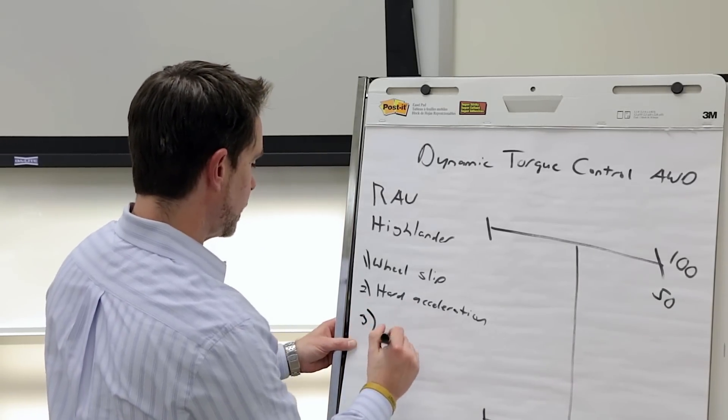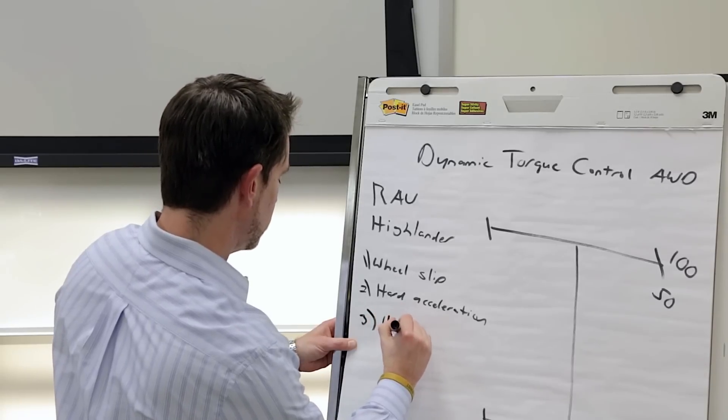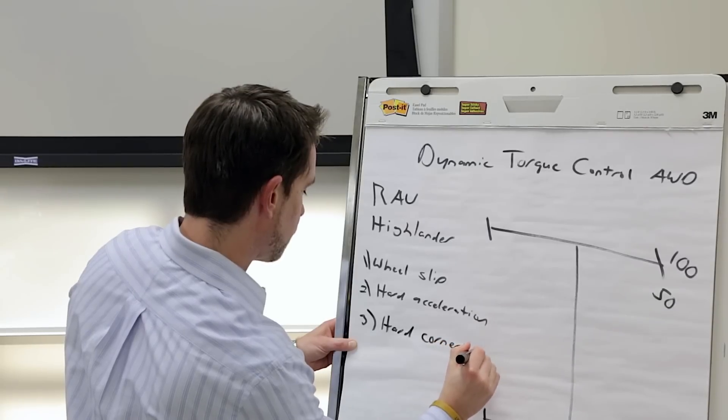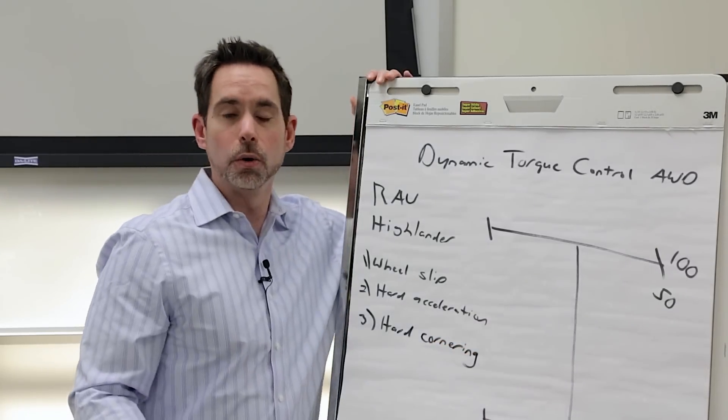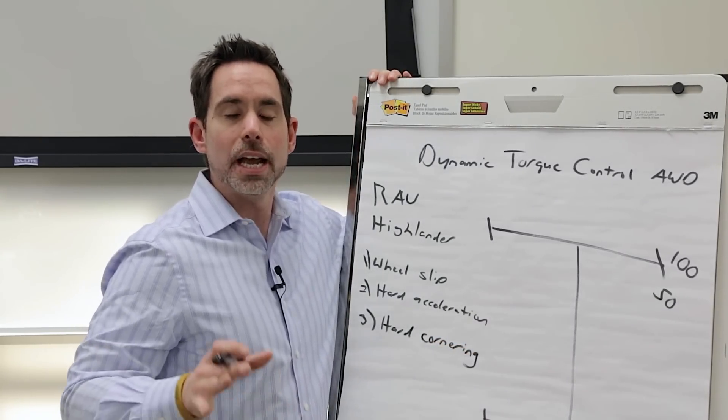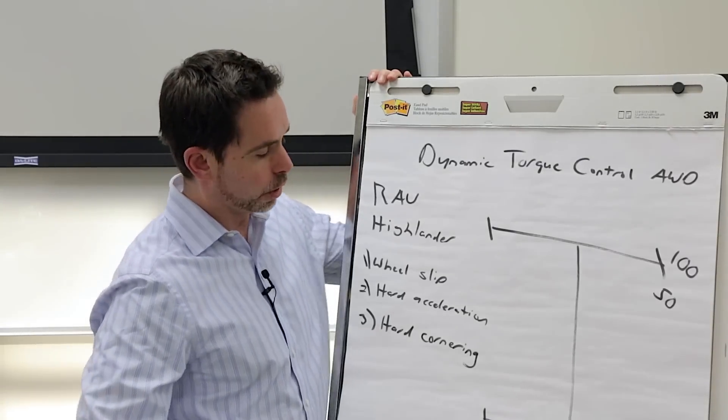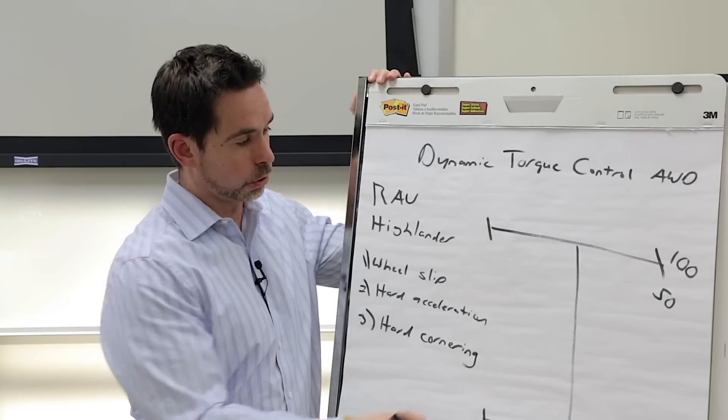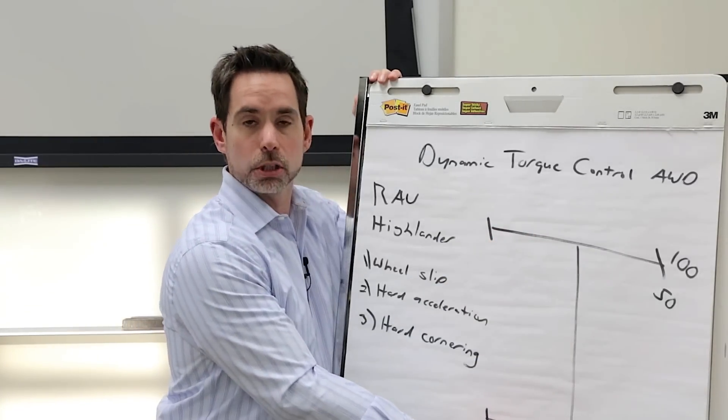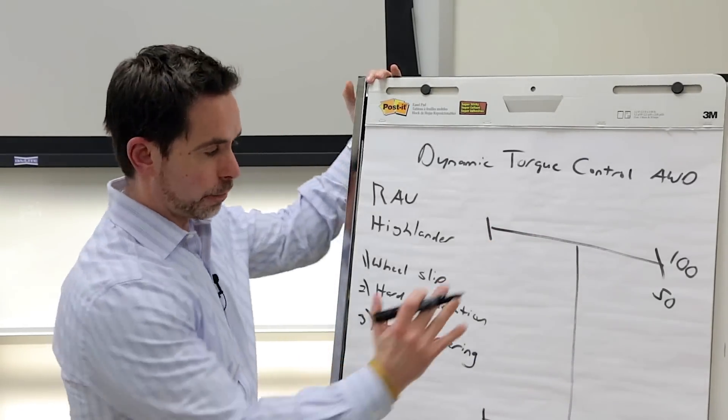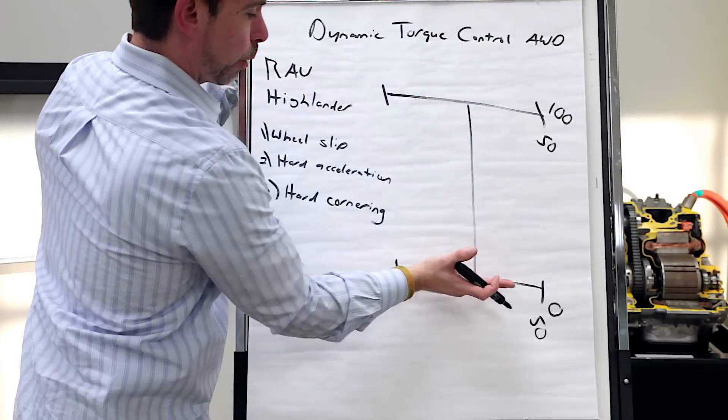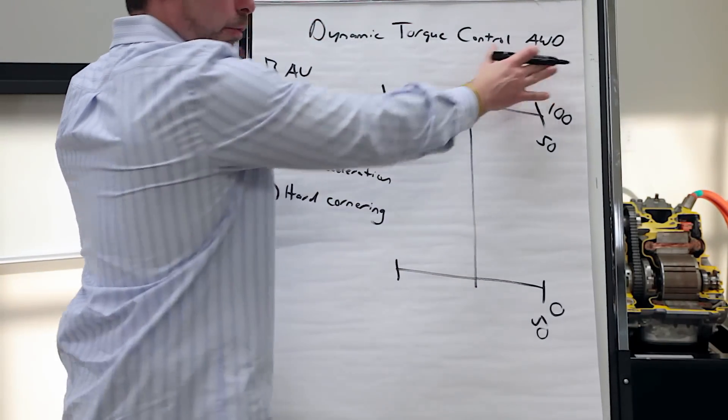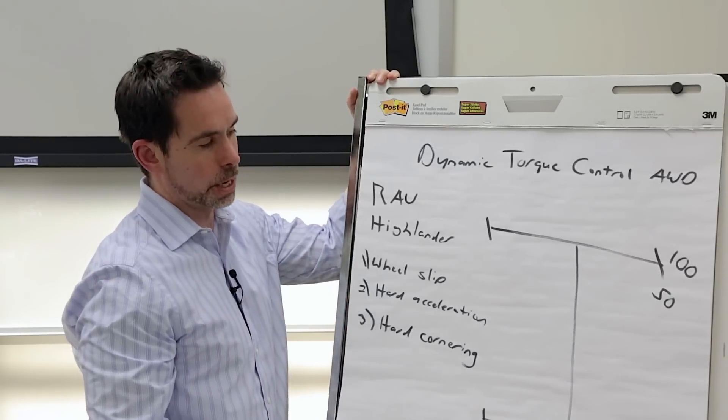And my third scenario is hard cornering. Some people do not know that an all-wheel drive vehicle handles better than a two-wheel drive vehicle. So, if I'm thrashing my RAV or Highlander around curves or around turns, I can get up to 50% of the power going to my rear wheels. Think about it. If I'm going around a curve and I have power coming from the back of the vehicle as well, it's going to help push that vehicle through that turn and help it corner much, much better.